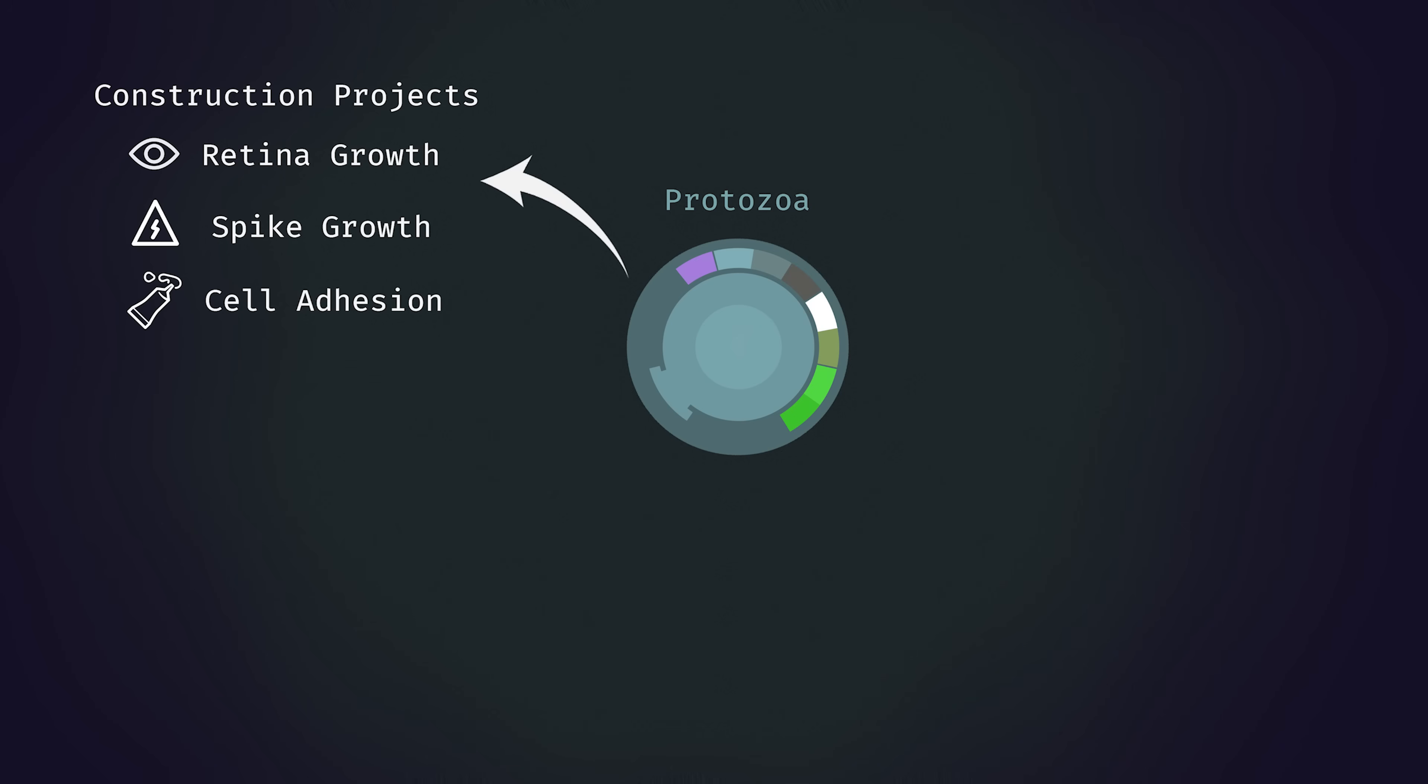However, a key ingredient in most projects is complex molecules. For instance, in order to grow a retina, a cell must have a supply of the molecule retinol available. Thus, another way in which a cell can use mass and energy is the production of these molecules.